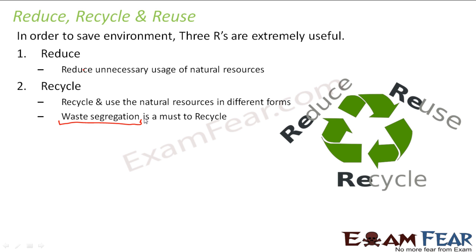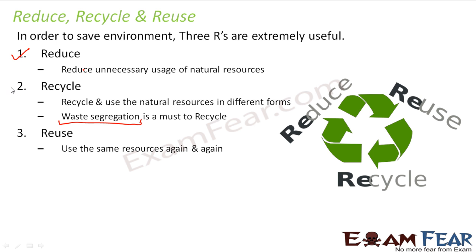The third R is reuse — use the same resources again and again. For example, when a bottle of jam is empty, instead of throwing it into the dustbin, you can use the same bottle for storing something else, like pulses or other items. We should try to use a material as long as it is possible, and only when it truly becomes waste should we throw it away. These three R's should always be kept in mind if we really love and want to protect our environment.